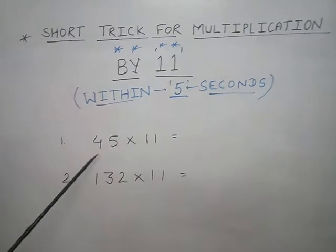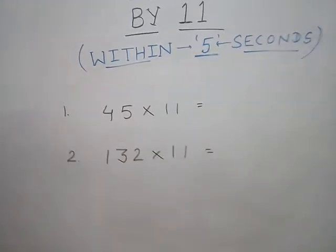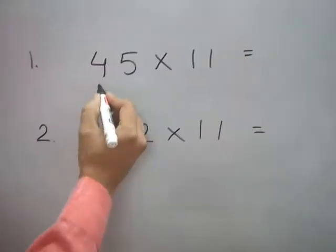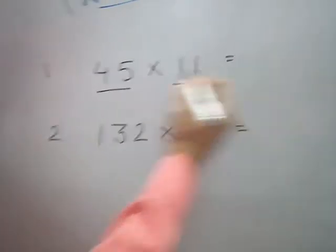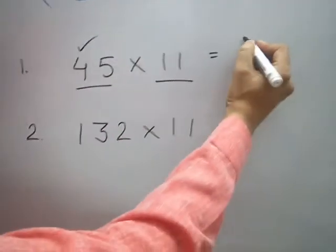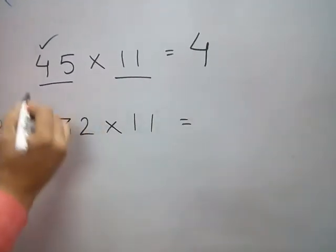First of all, for 2-digit numbers, the first question is 45 times 11. See, I am taking 4 as it is.